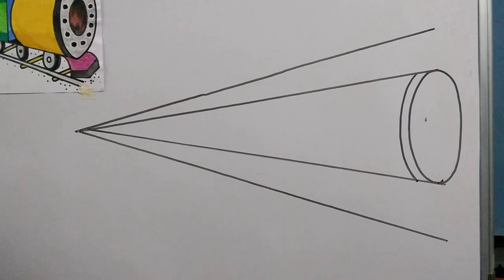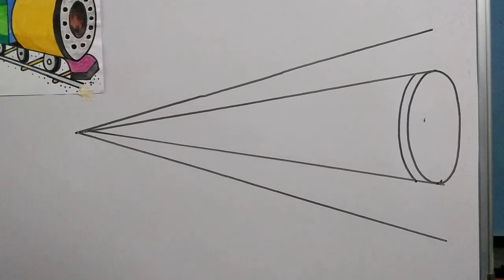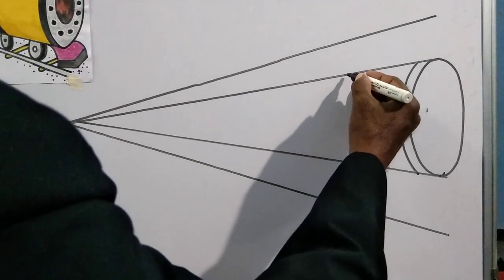Step No. 5. Leave some space and draw C letter as shown in the picture.